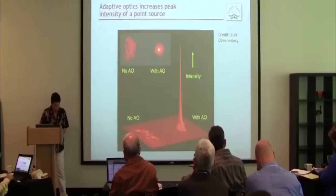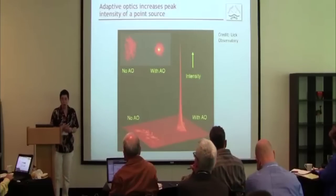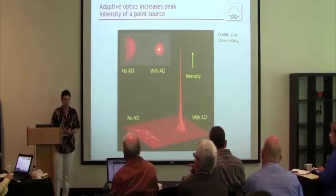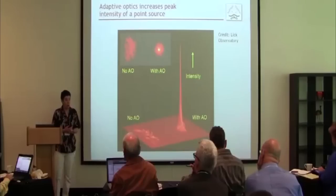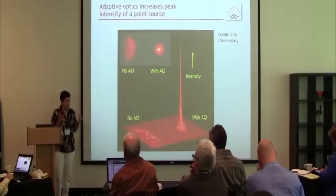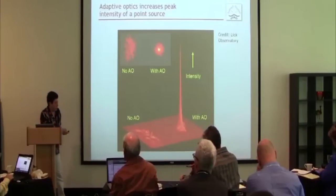This afternoon you're going to see the Gemini Planet Imager, which we're putting together here. It's going to be one of the big instruments on the Gemini telescope, dedicated to seeing faint planets around nearby stars.